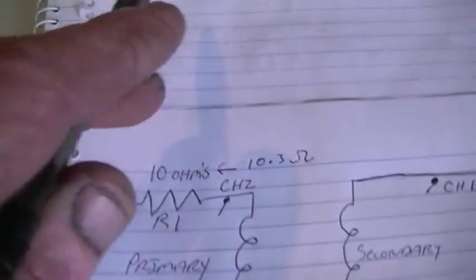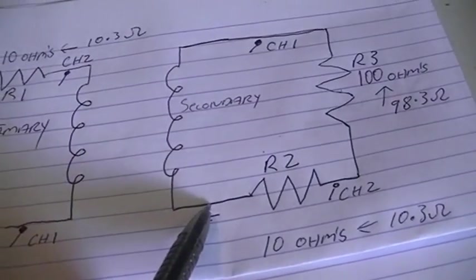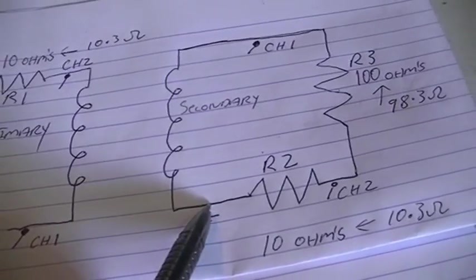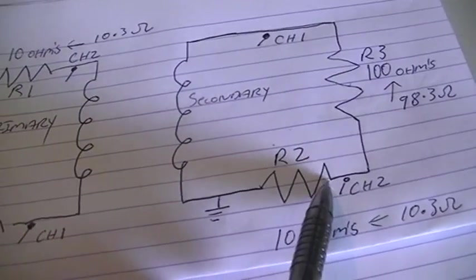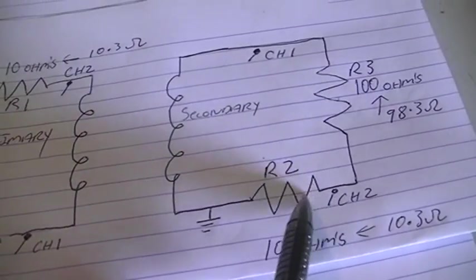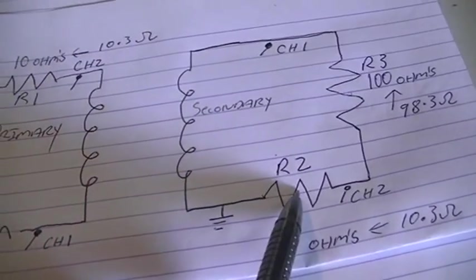Which we have done here. And on our output, we have the ground of our scope here. Channel 2 is here measuring the current across our CVR. But once we know the voltage across our known resistance, we can calculate the dissipated power.